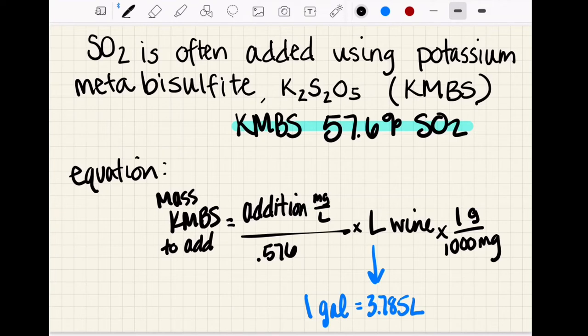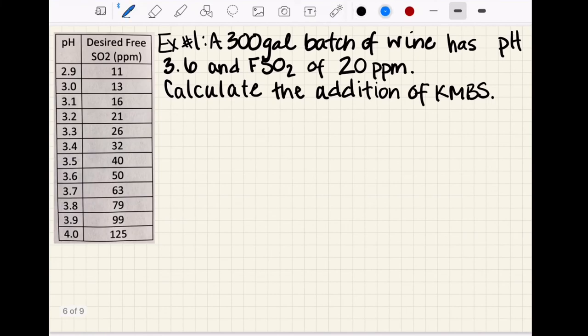Now we can take a look at our example. We have a 300 gallon batch of wine with a pH of 3.6 and a free SO2 of 20 ppm, so we need to calculate the addition of KMBS to add. First, if we look at our pH of 3.6, our desired or target is going to be 50, so we need to do our target minus our current to give us our addition.